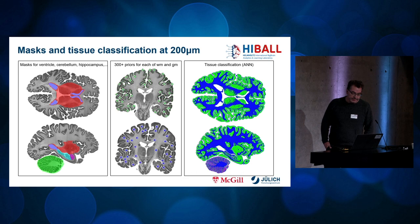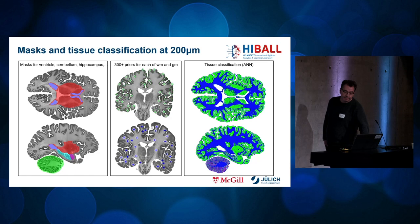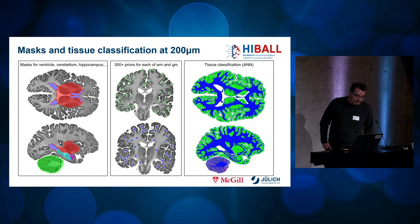To compute the cortical surface model, the dataset was classified into gray matter and white matter at 200 microns. First, masks were created for the subcortical areas and the cerebellum. Afterwards, 300-plus priors were set for the gray matter of the cerebral cortex, shown in green, and 300 priors for the white matter, shown in blue. Finally, a white matter classification for the complete dataset was computed, shown on the right side.